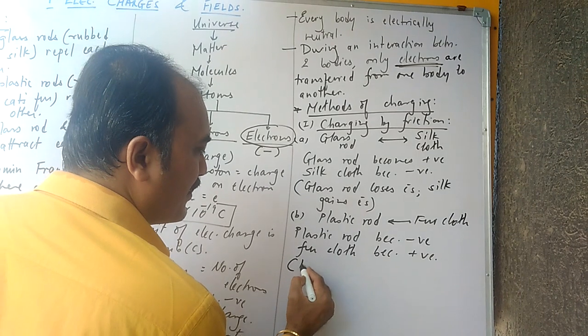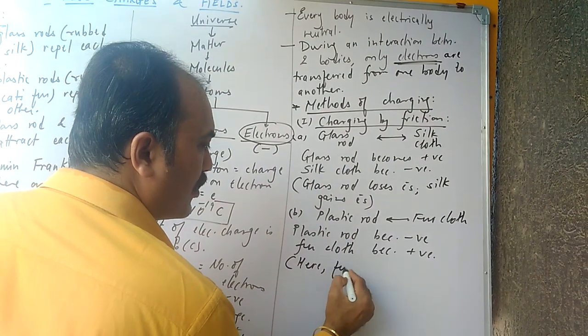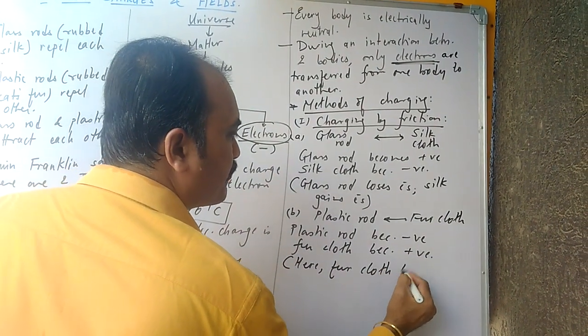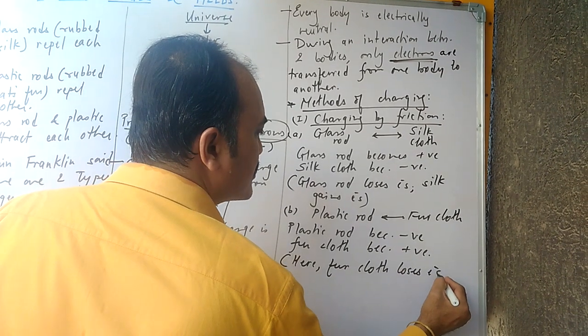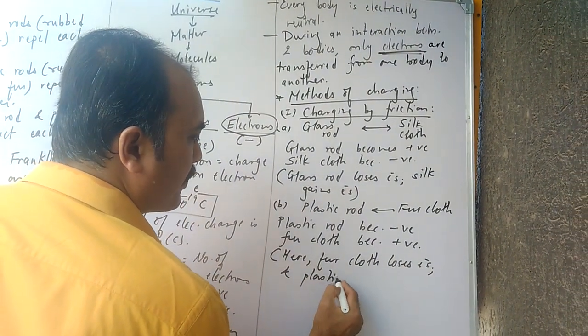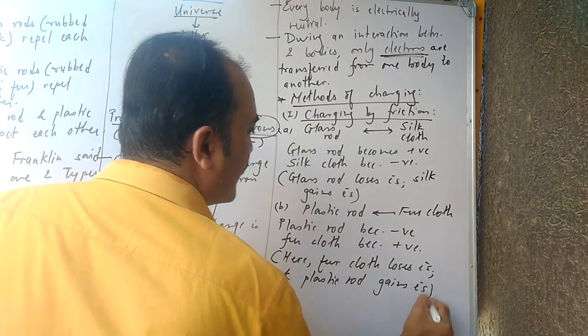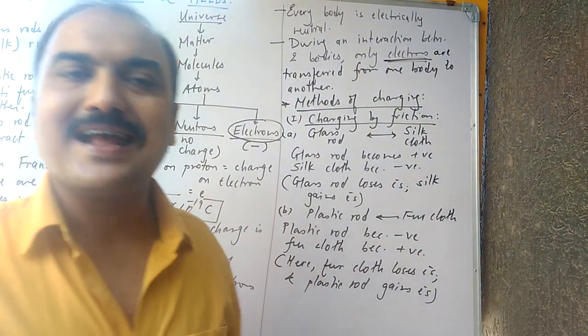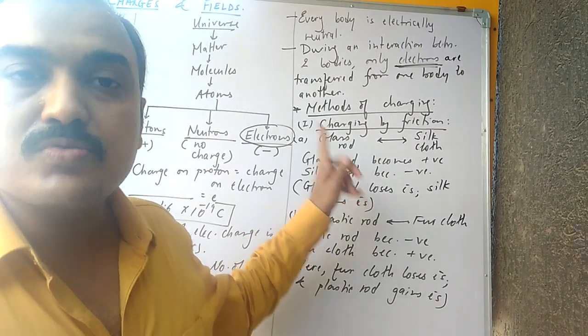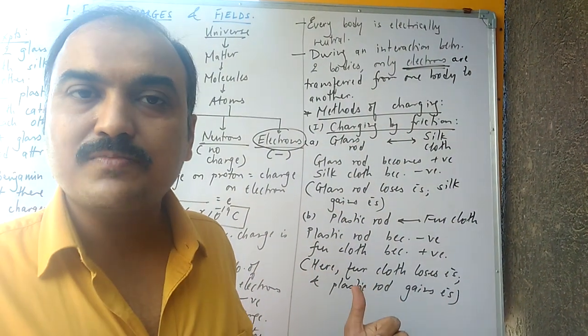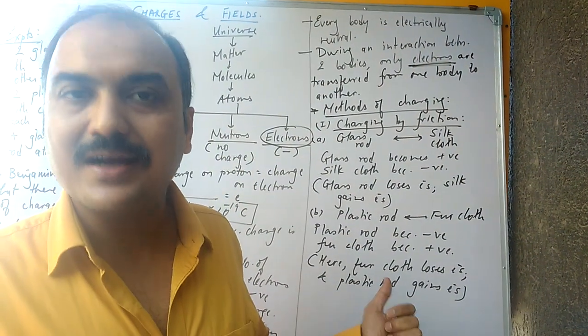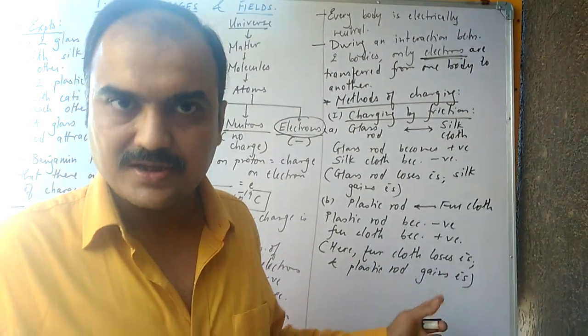Can you tell me what happened here? Plastic rod gains electrons, whereas fur cloth loses electrons. So here, fur cloth loses electrons and plastic rod gains electrons. This is the entire idea. This was charging by friction. In the next board, we will discuss charging by conduction and charging by induction. This is it.